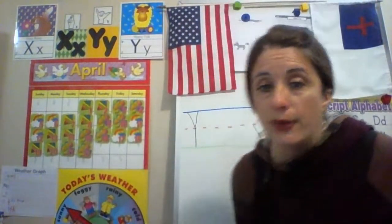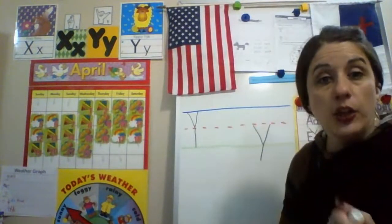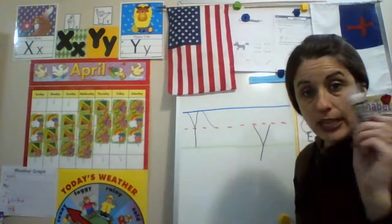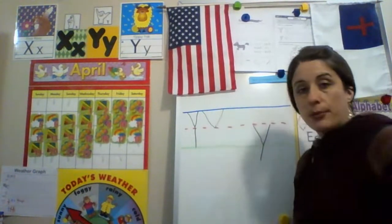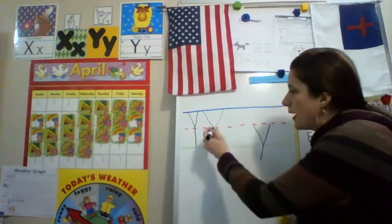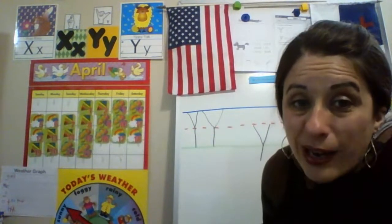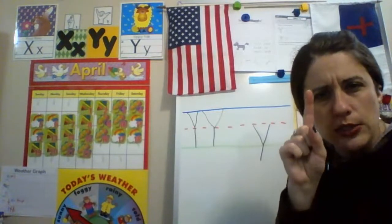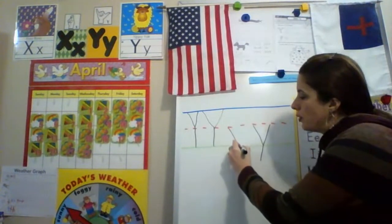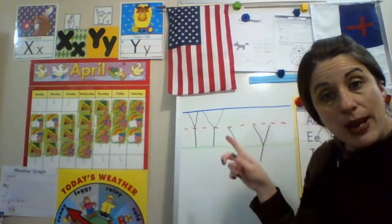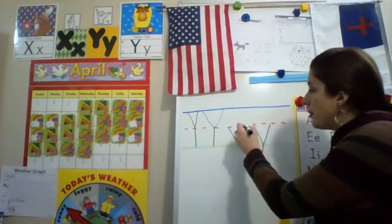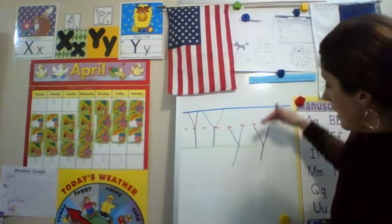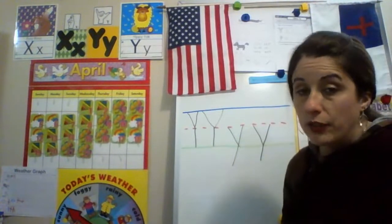Before we go, I'm going to show you on the board how we do this. Uppercase Y starts at the sky — it goes from the sky to the fence, slides down, pick up the pencil. Leave a gap and go from the sky to the fence, pick up your pencil — that's one, two. The third line goes right here in the middle, straight down. Now lowercase y — the short line is first. It starts at the fence and goes to the grass. Then leave that space and put your pencil there and slide all the way under the ground. It's a slanted line that slides under the ground.